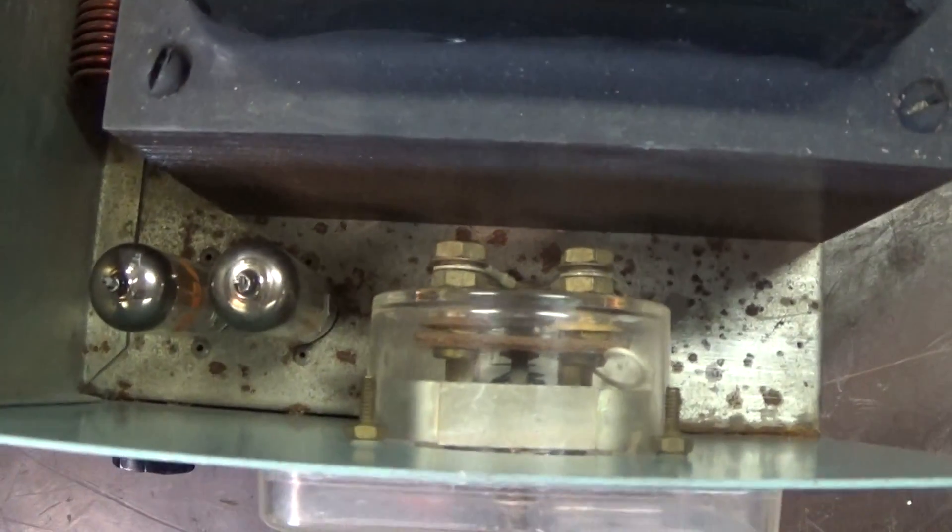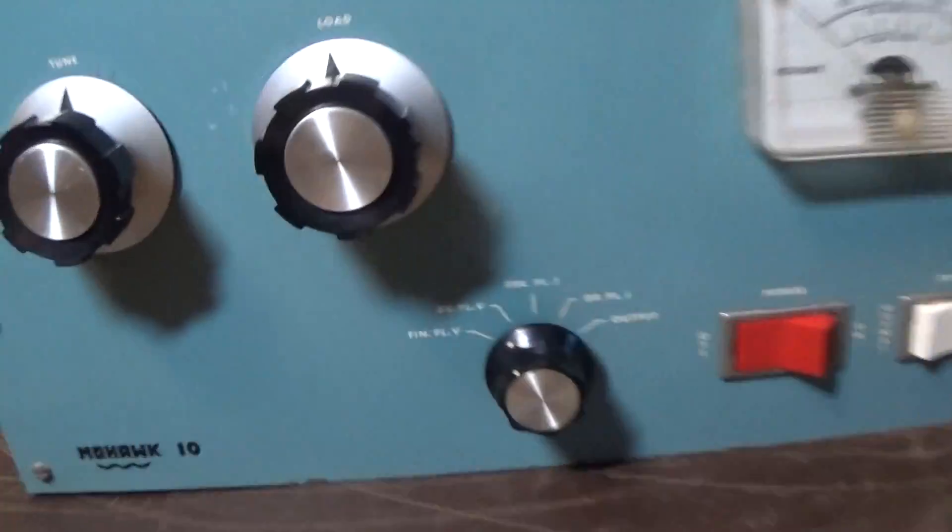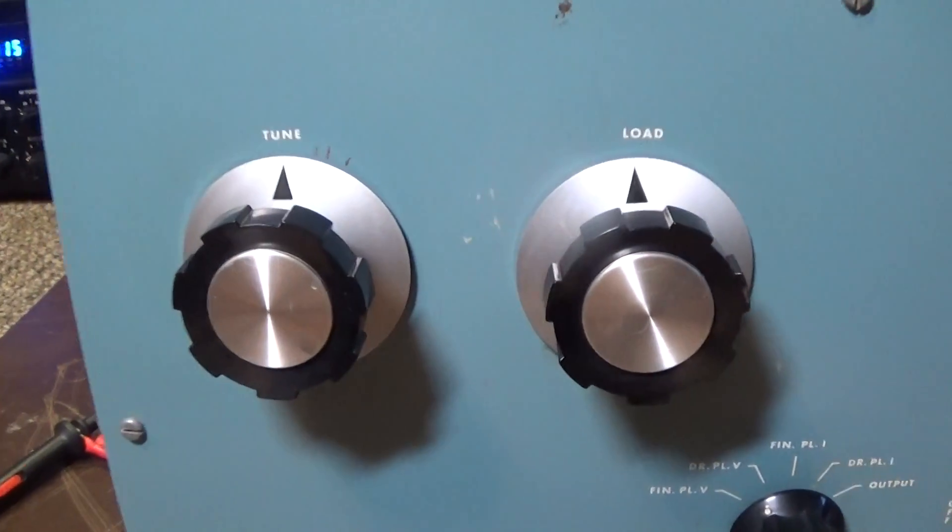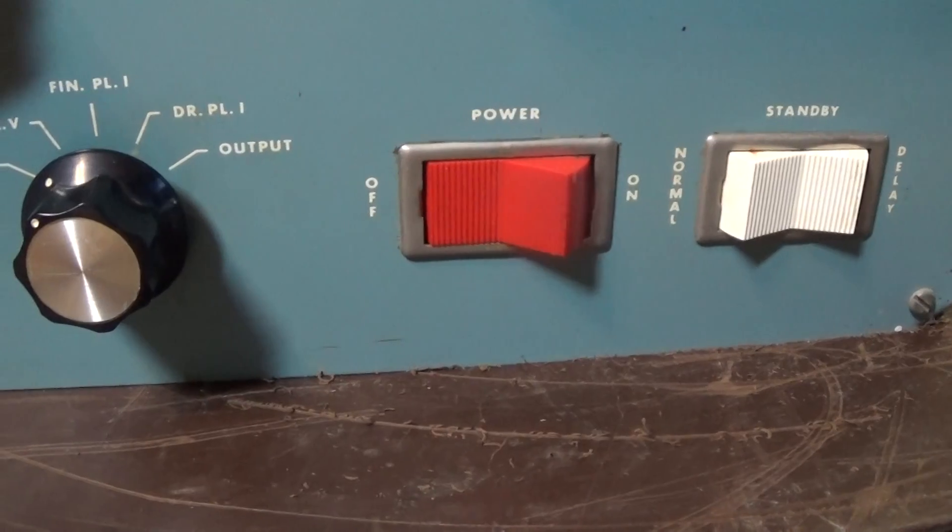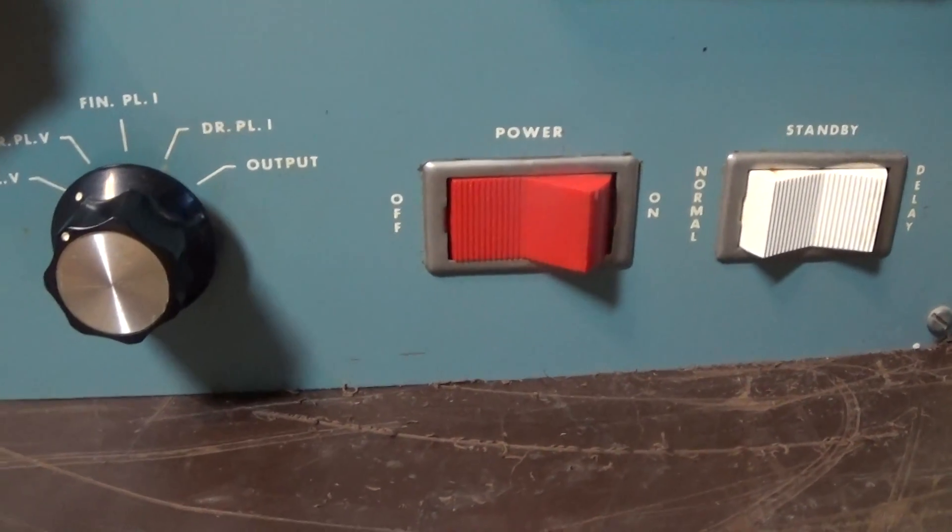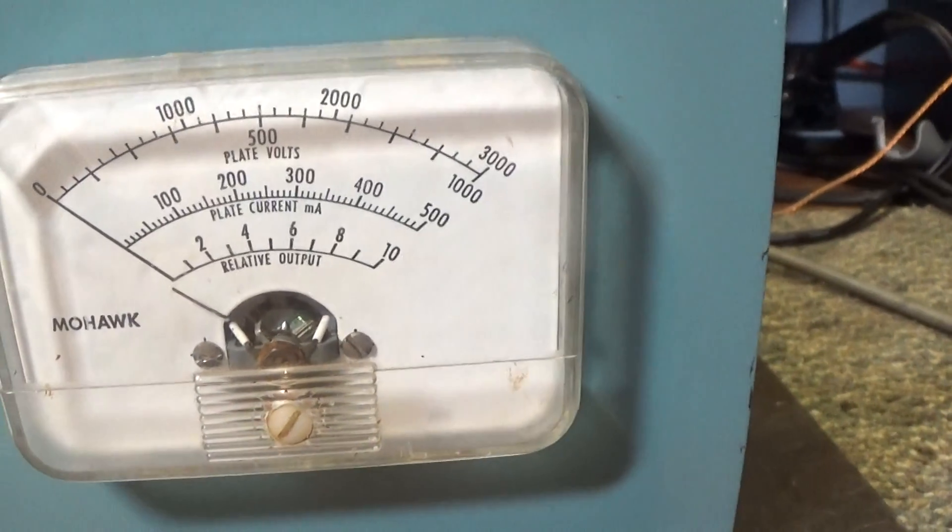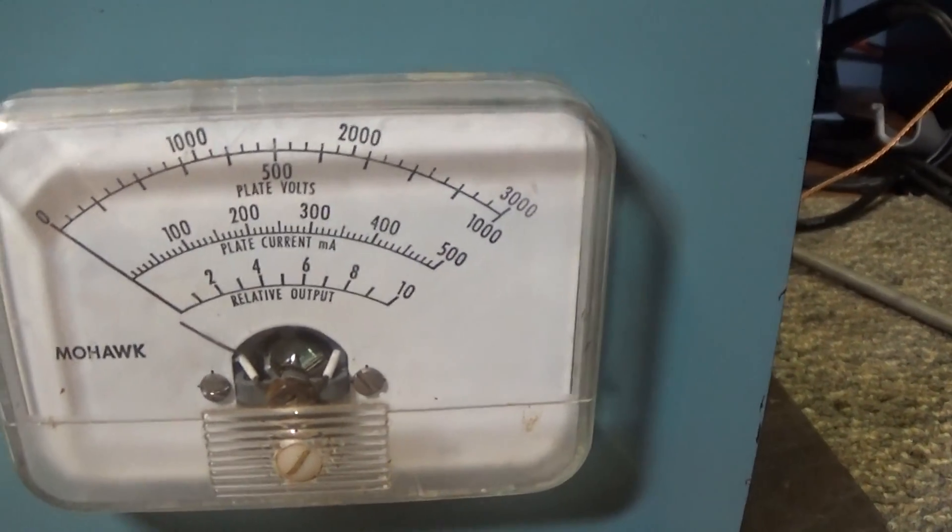On the front we have standard tune and load for the amp. We have the multimeter for plate voltage, drive voltage, plate current, driver current, and output. However, if you notice, this meter is broken. It tries to work but the meter is broken off and it doesn't track right. Anyway, got the main power on and off.